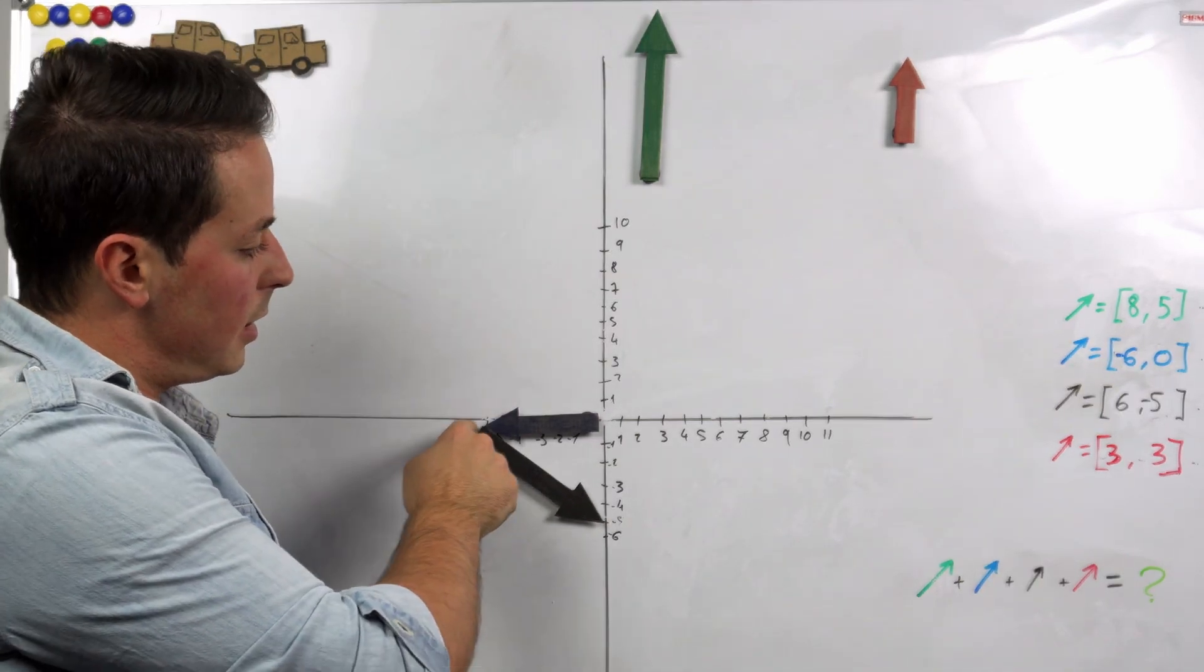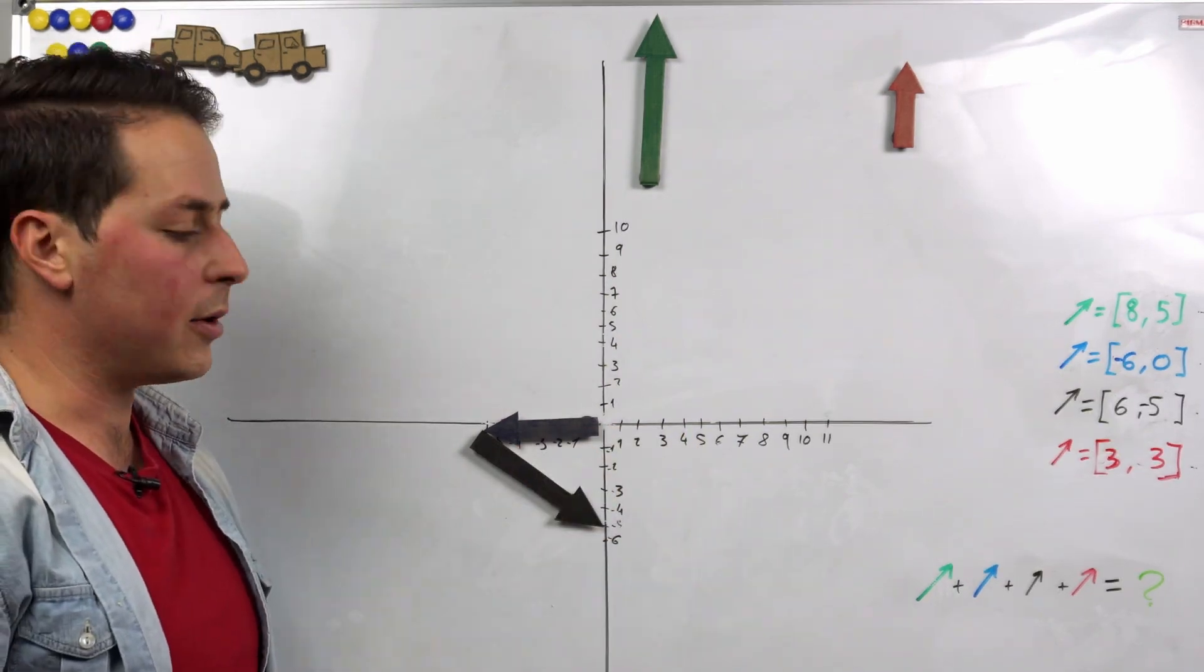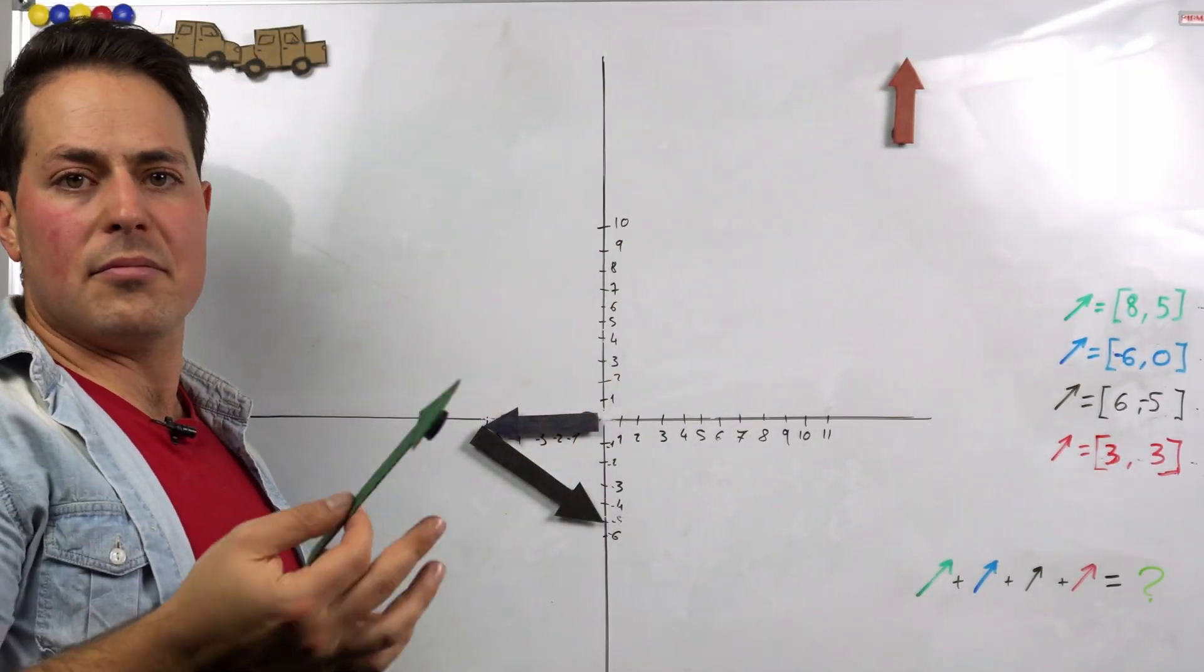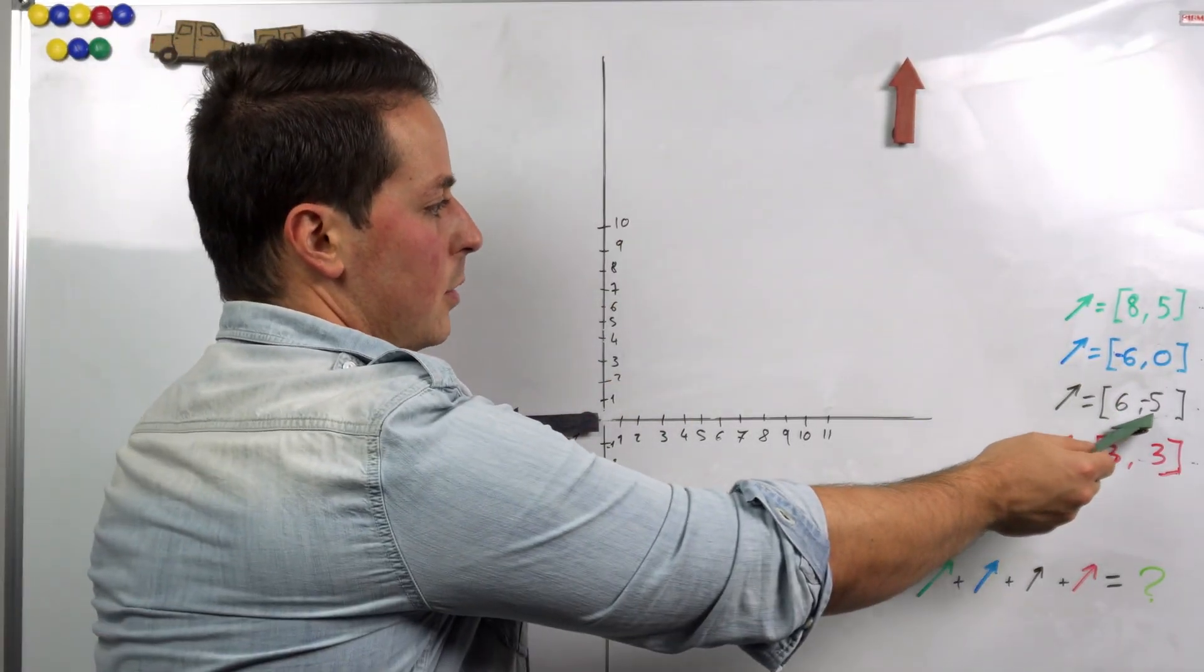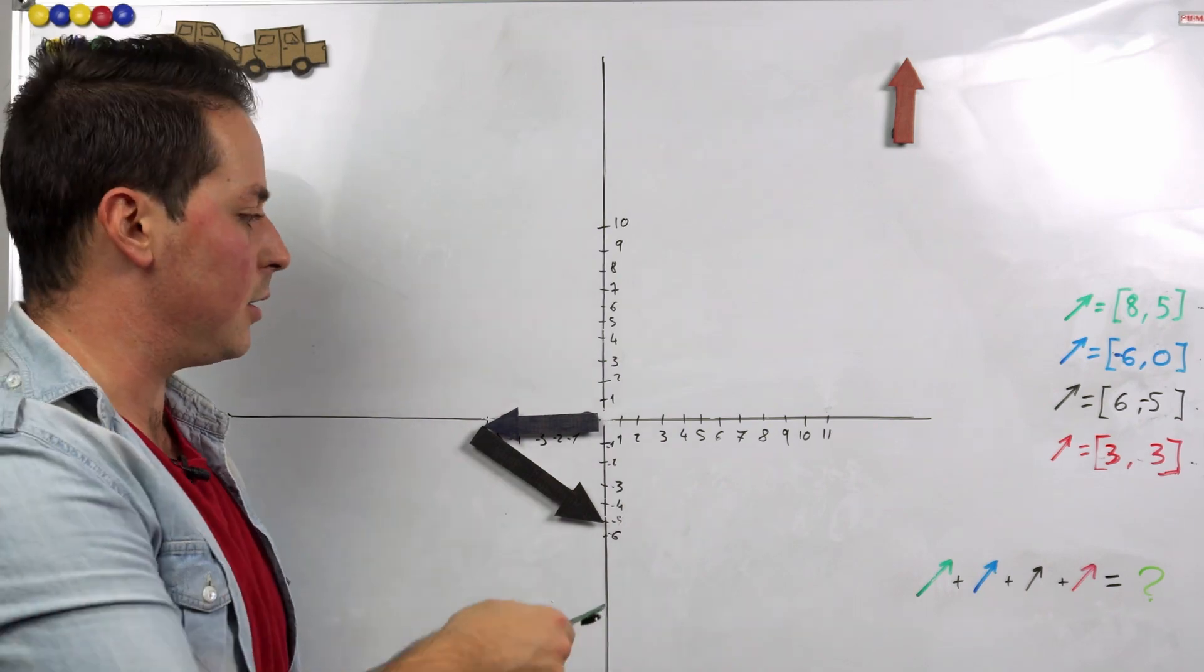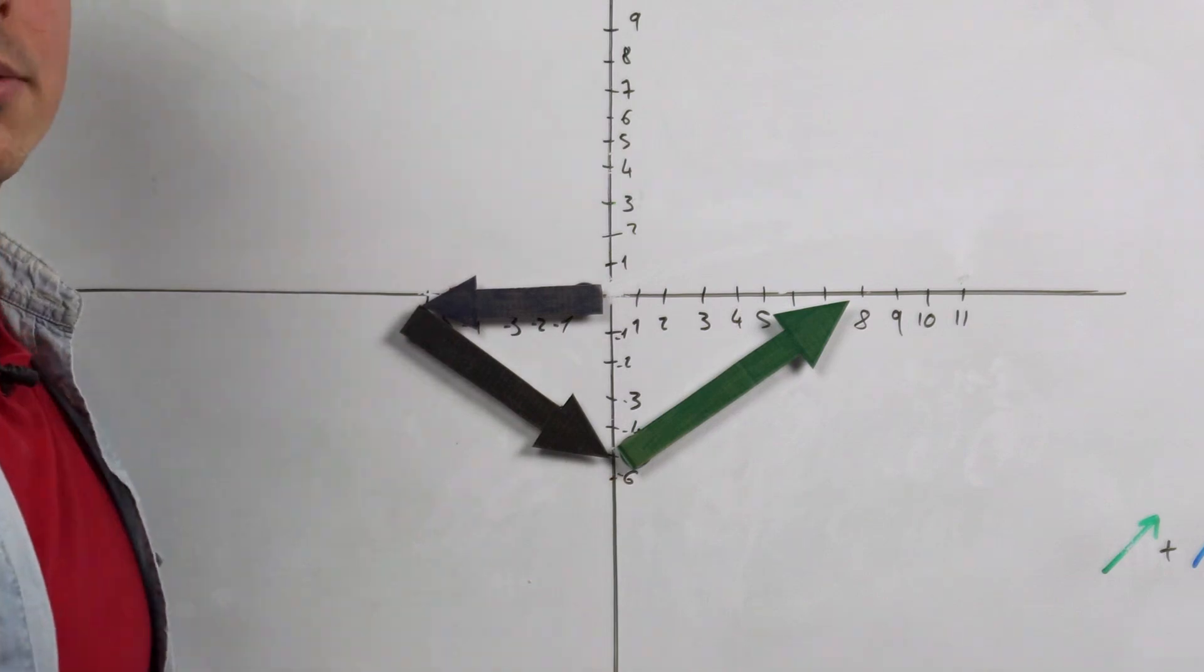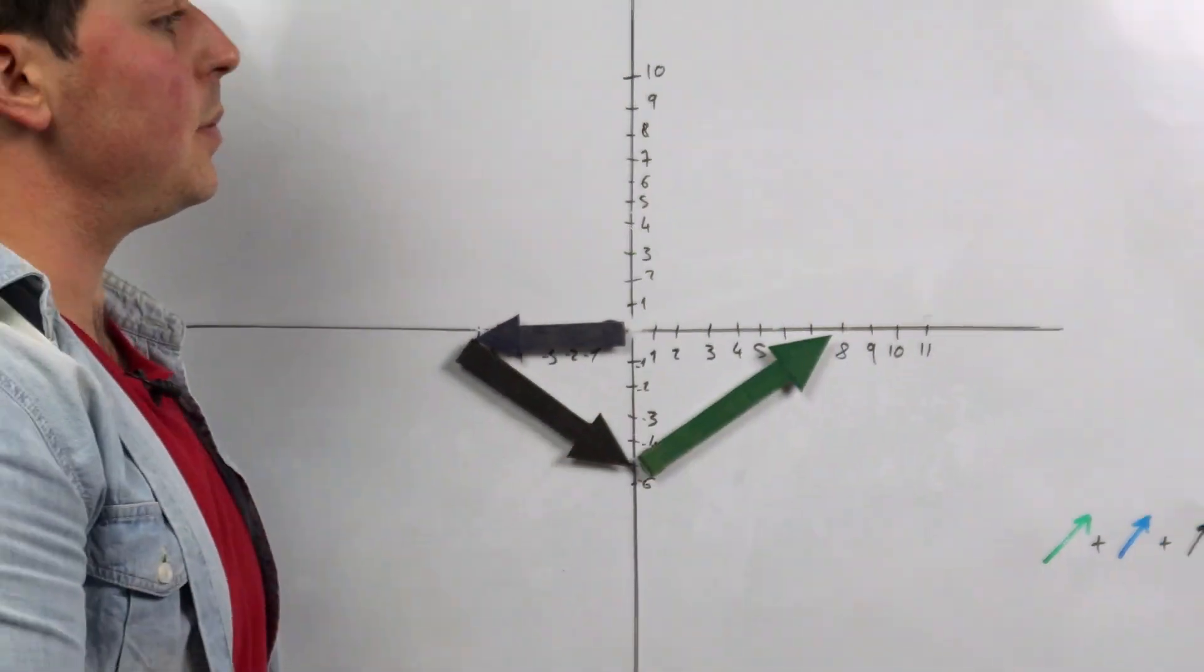As you can see, we go 6 on the horizontal and -5 on the vertical and we end up at this point. Now I take the green one because, basically the same reason, -5 and 5 should cancel each other out on the vertical line. So 5 up and 8 to the right, and we end up at this point.